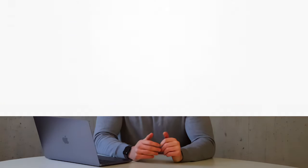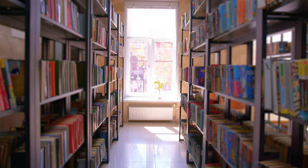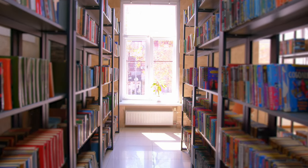No one knows exactly how many scientific articles are published every year, but the number is around 2 million. As practicing healthcare professionals, it's your responsibility to stay up to date with new developments in your field of practice, and the scientific journal article is an important way of achieving this. Clearly, you're not going to be able to read all of the research that is published, so when you sit down to read an article that you think might be relevant, it's important to make the most of that time.